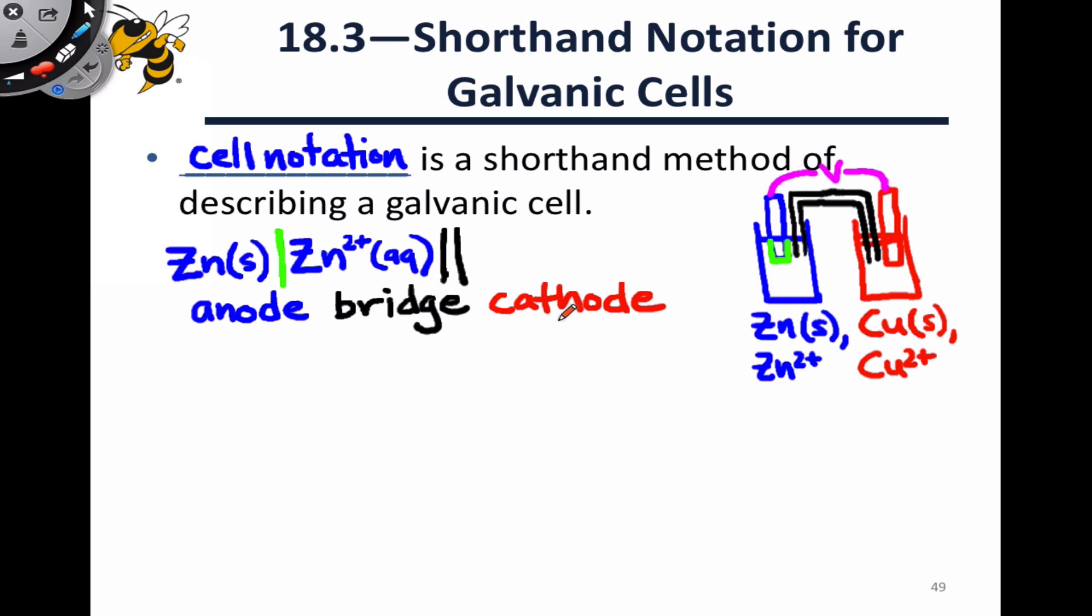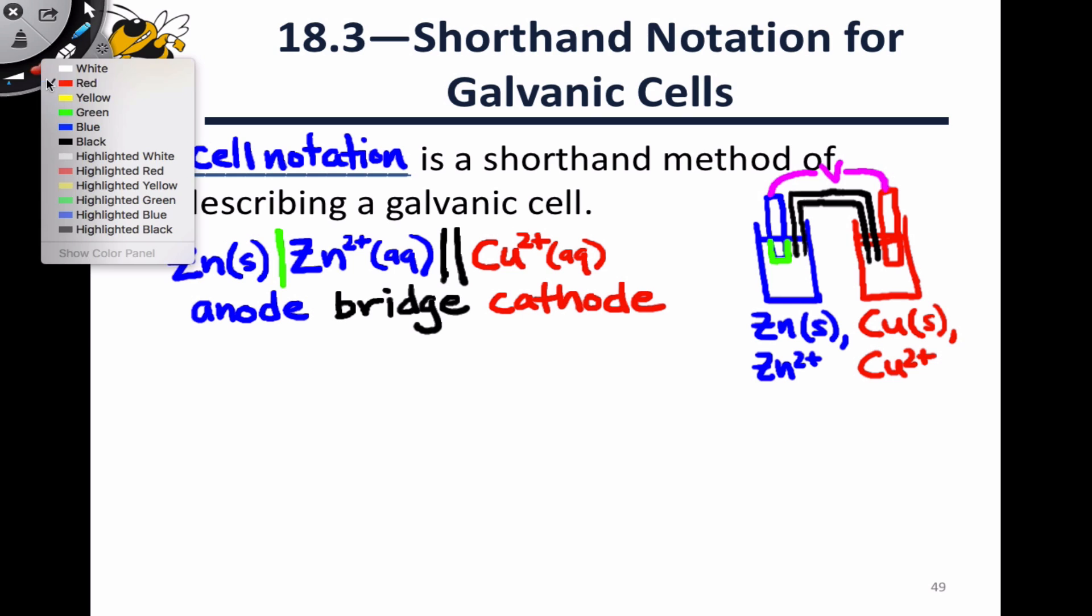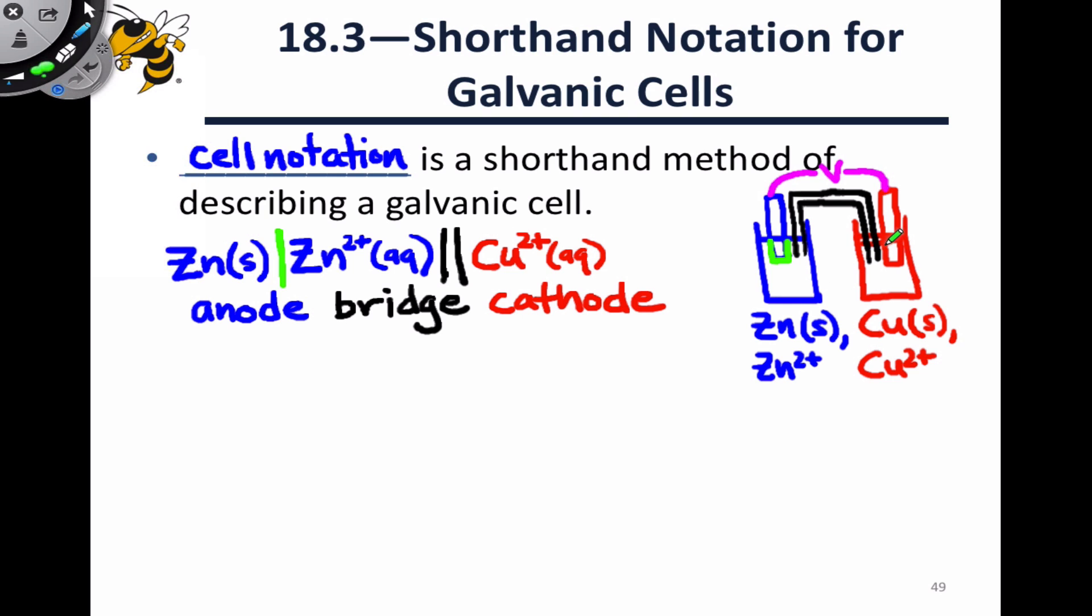For the cathode, we do something similar, again following the rule that the reactants appear first. Reduction occurs at the cathode, and so Cu2+ is included first. It's aqueous, it's the aqueous solution over here in the cathode. And again, there's a phase boundary between the copper solid and the Cu2+ aqueous solution. And so we use another green line to represent that. And finally, the ultimate product of reduction at the cathode is copper solid, and that's included last.